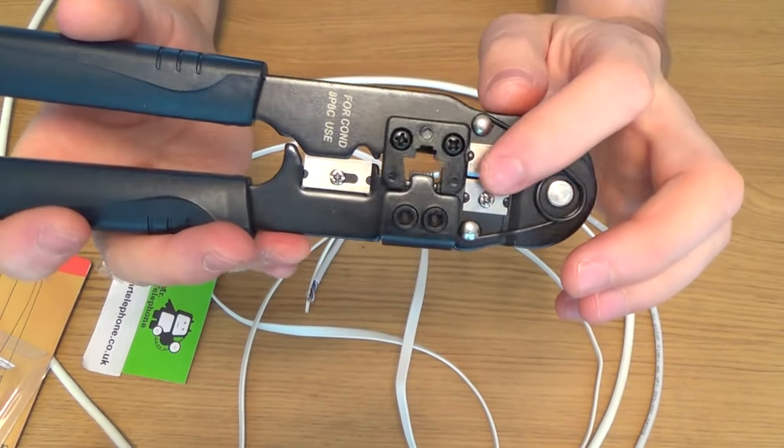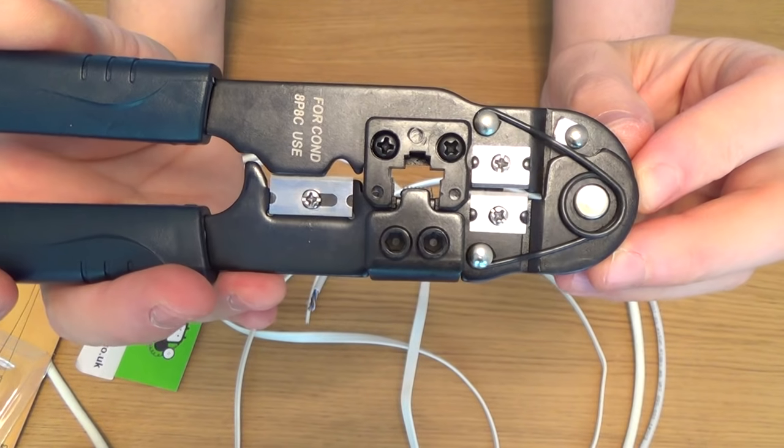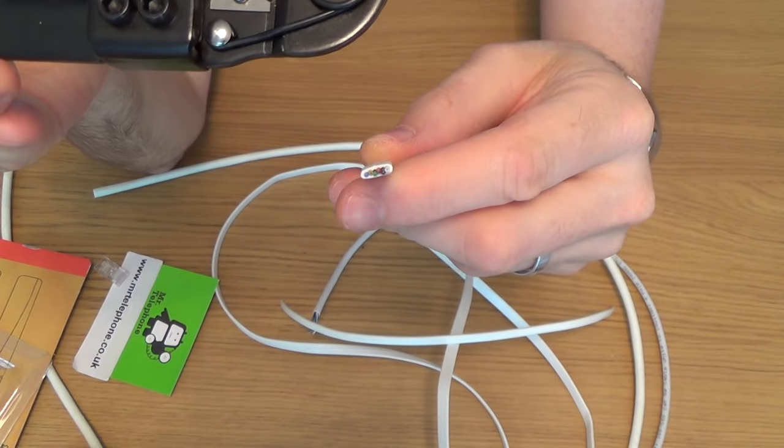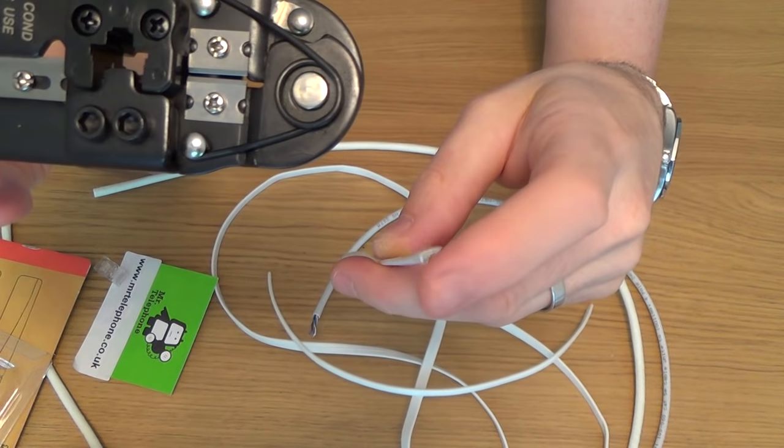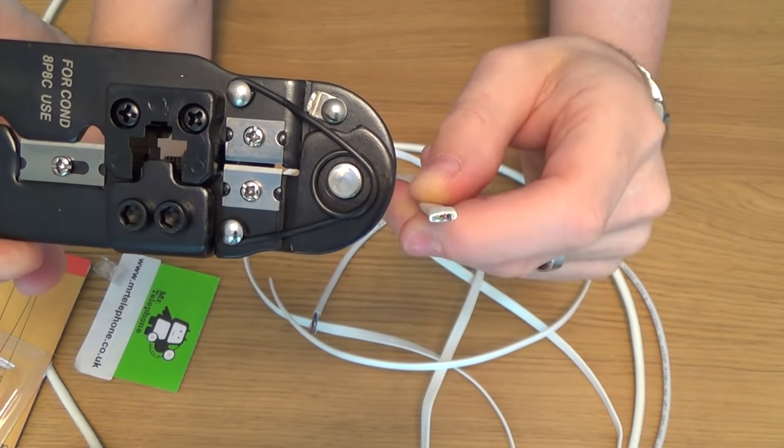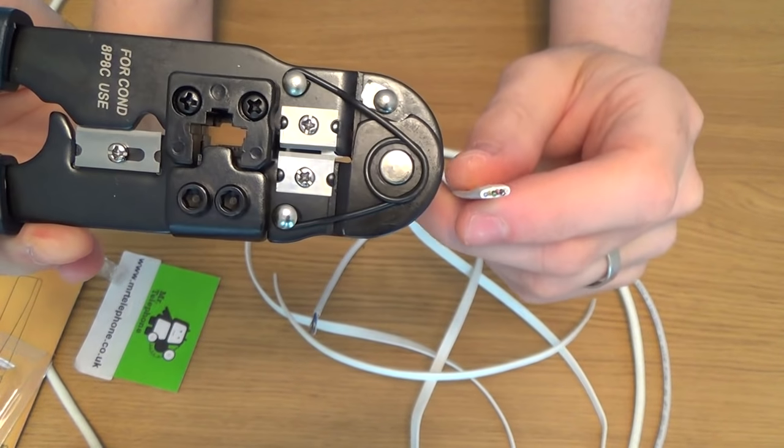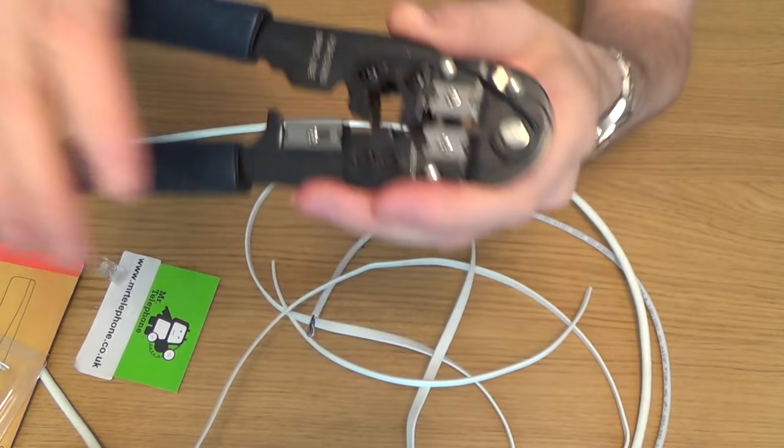And these blades here, you can see they don't quite meet. That's because they are for stripping flat cable, like this cable here. So you might be using this for an ADSL cable, not a very good quality one, but you might be using it for a phone system or a little phone lead or something. So this is really nice here for stripping back the flat cable. So I'm just going to show you the stripping back of the flat cable to begin with.